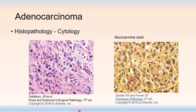If the glandular features don't help you, the cytologic features can. If you ever see an image like this on a test you'd be hard-pressed to identify this as mucin, but if you see a special stain like mucicarmine or a PAS stain demonstrating the presence of intracellular mucin, think about adenocarcinoma.